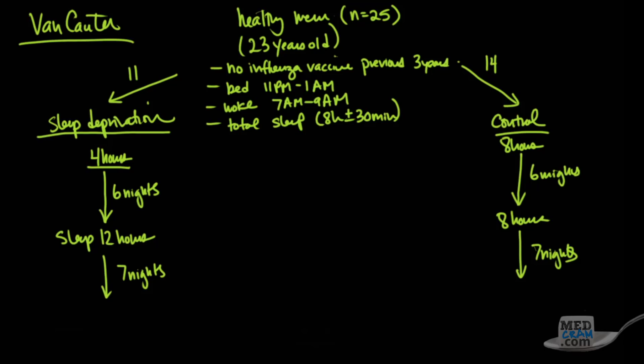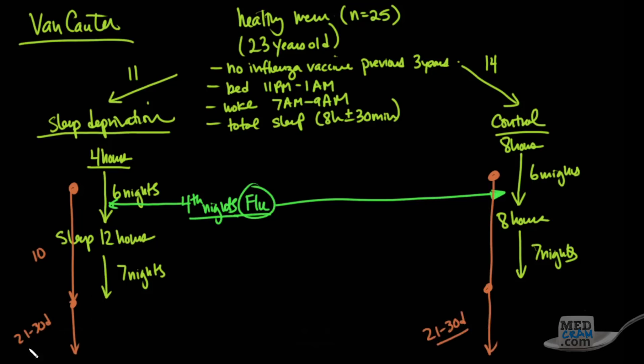They took measurements of antibody titers just before immunization. They were given immunization on the fourth night—flu vaccine given at the same point in both groups. They measured antibody titer at this point, then again 10 days later, and then 21 to 30 days later.